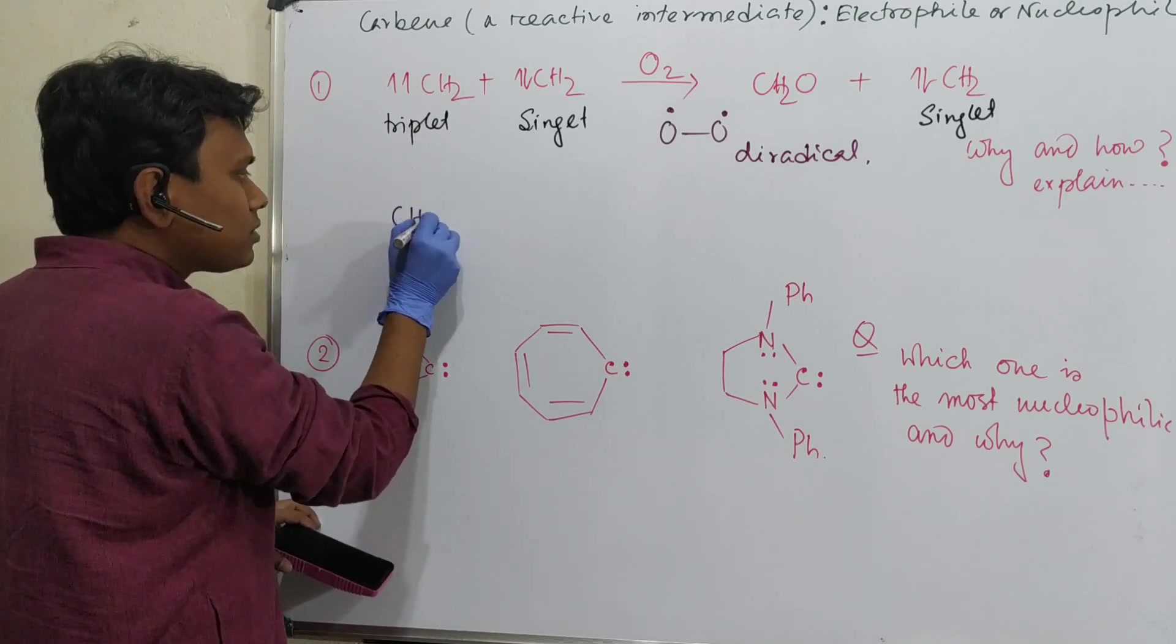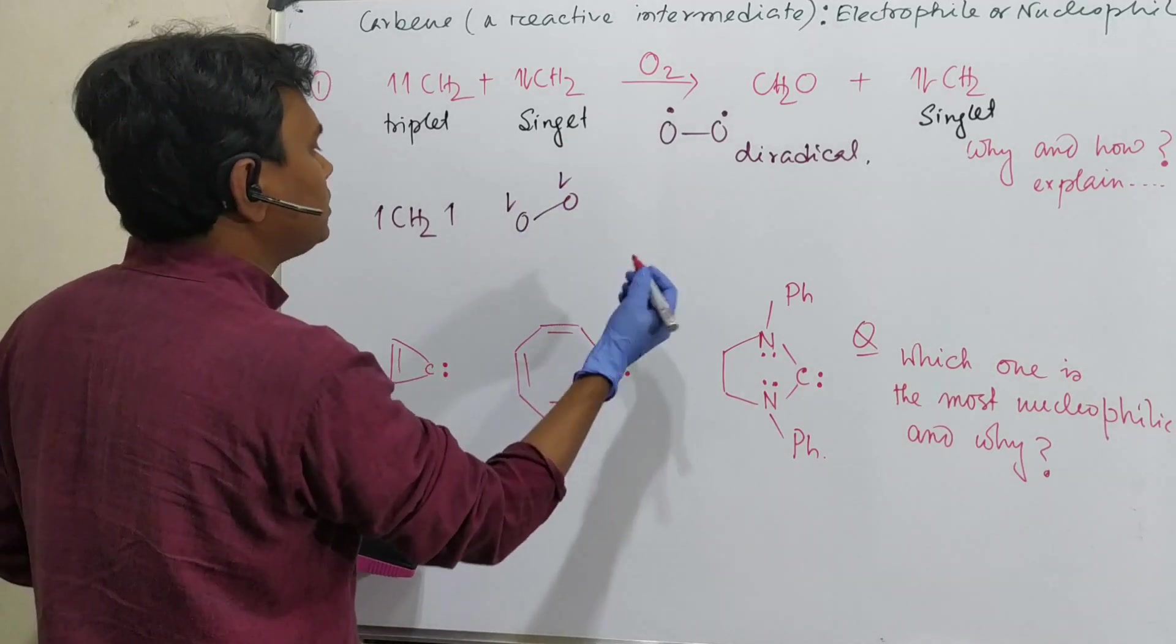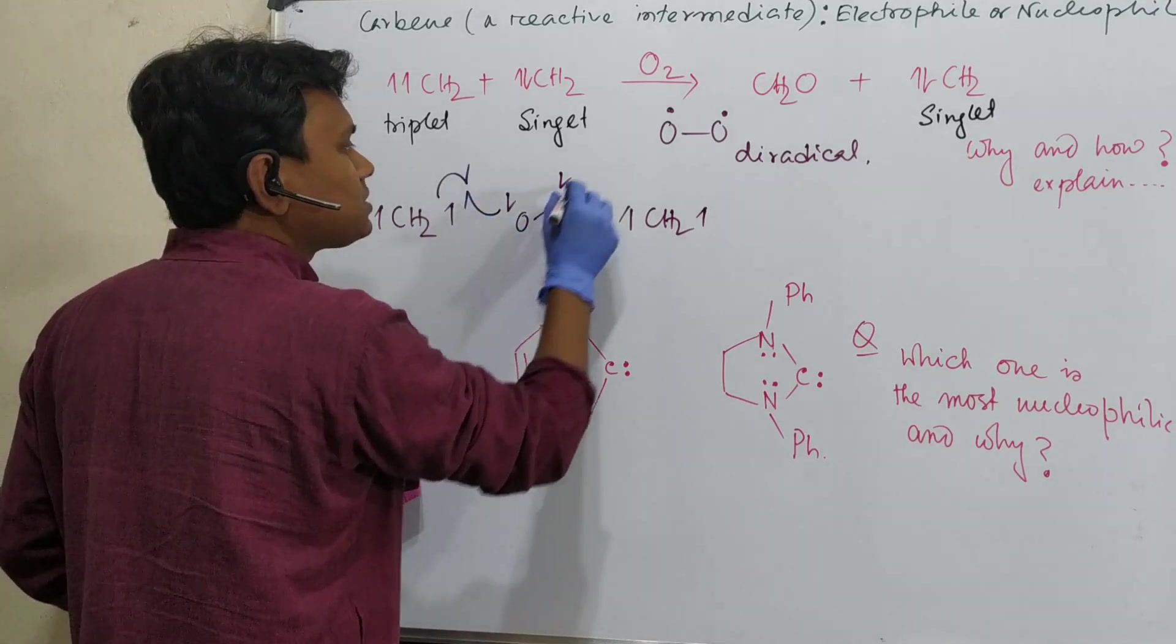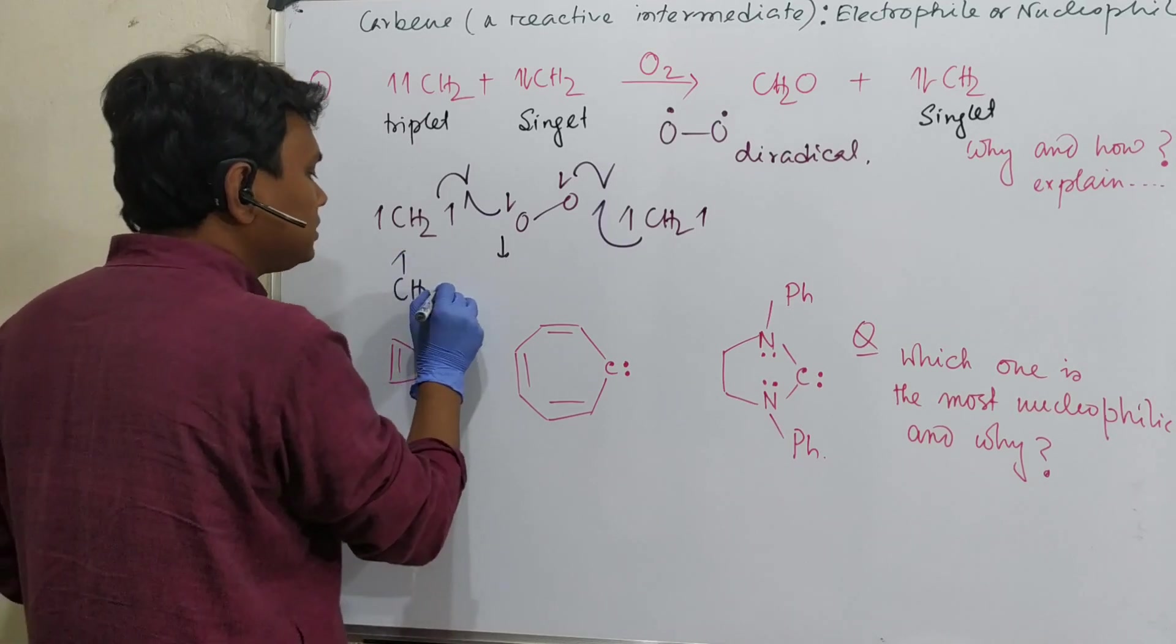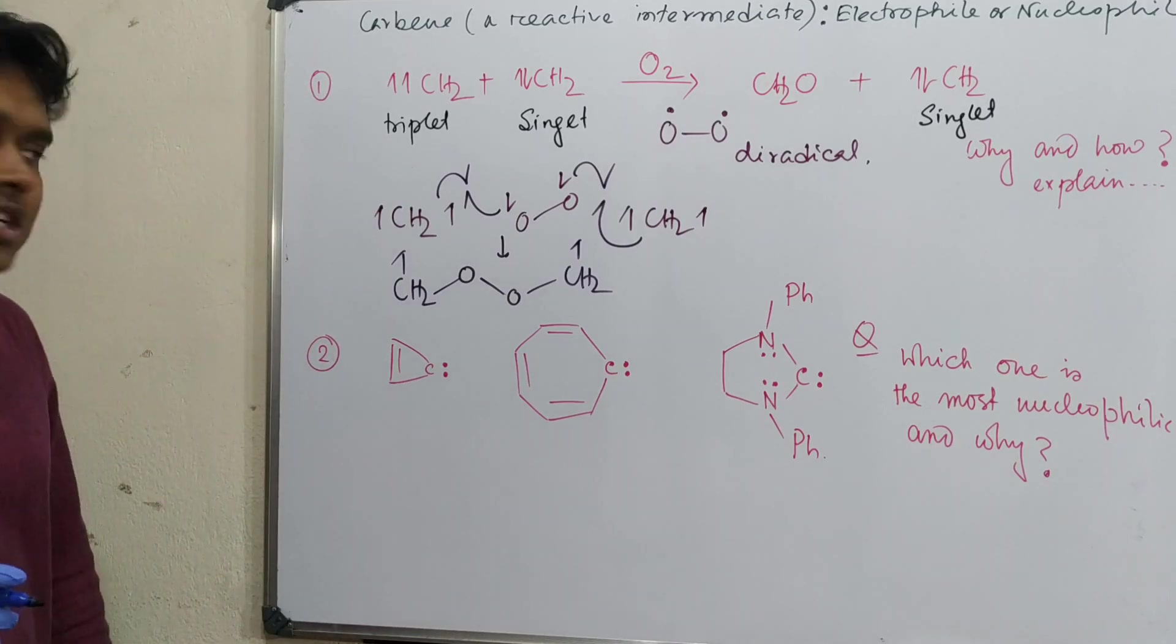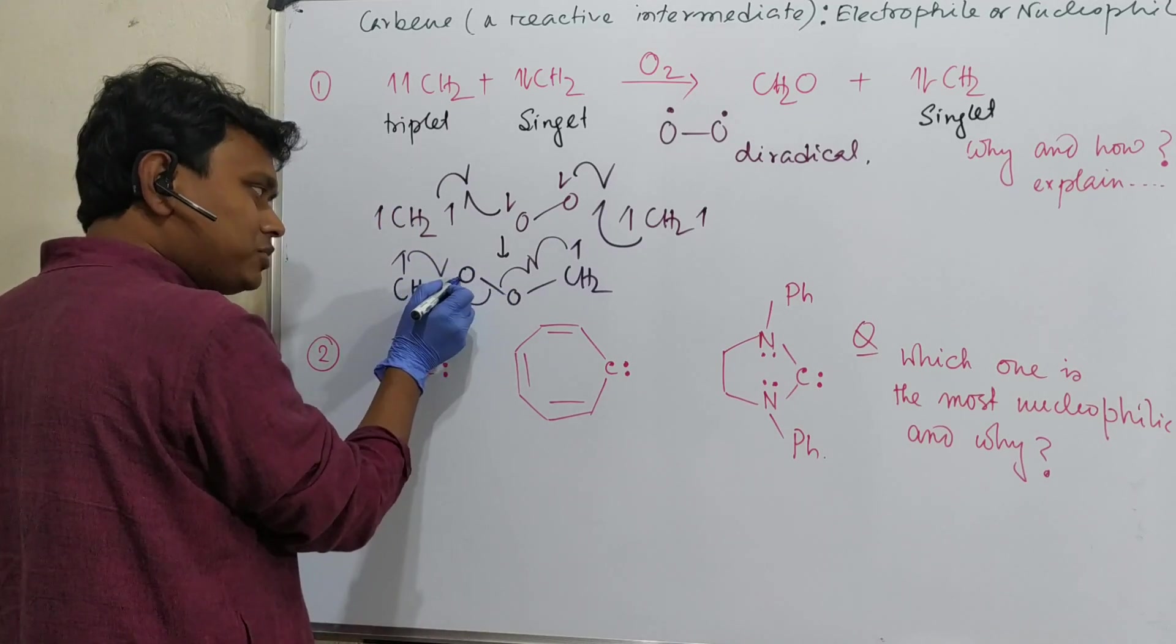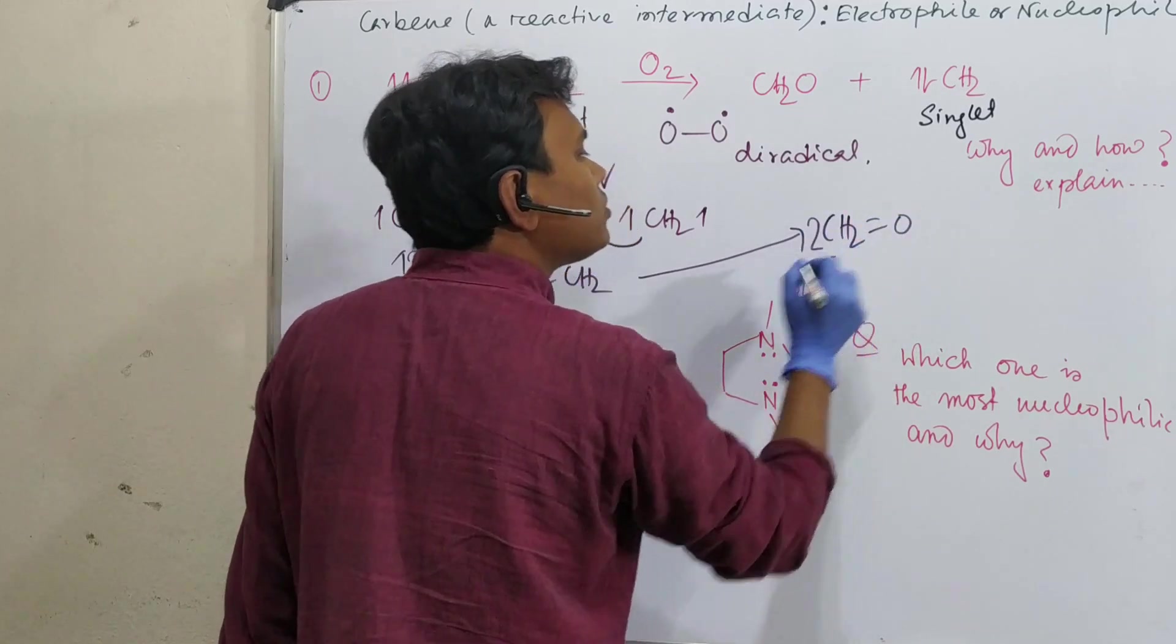Simple thing: if it is diradical, then it will react with diradical and that happens. So this CH2 reacts with oxygen. For example, let us think one CH2 and another CH2. What happens? Both react with each other - one fishhook arrow, one this. What will be the product? This is CH2 radical bonded to oxygen, oxygen bonded to CH2. Next step: bond splitting. One electron comes from here, one here, one here, one here. So ultimately this bond breaks and previously there was one bond between oxygen and CH2, now it is a double bond. So CH2 double bond O - formaldehyde.